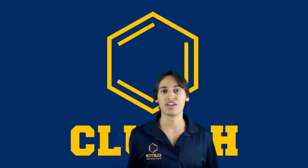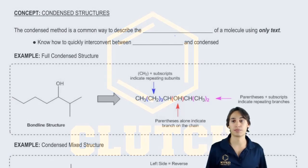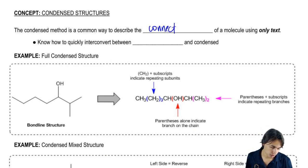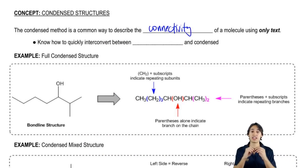Hey guys. Now we're going to talk about another way to represent organic structures, and that's called the condensed structure. The condensed method is a common way to describe the connectivity of a molecule using only text.